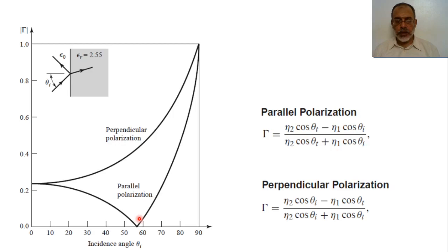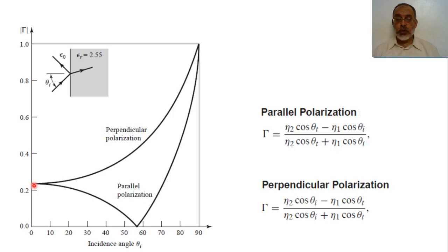At angle of incidence equals zero, both parallel and perpendicular polarization have the same reflection coefficient, corresponding to the normal incidence case. At normal incidence it is not meaningful to distinguish parallel from perpendicular polarization, since in both cases the total electric and magnetic fields are tangential to the interface. The reflection coefficient for both reduces to the normal incidence formula: (eta2 minus eta1) over (eta2 plus eta1).